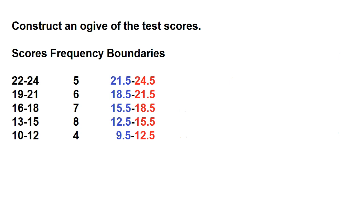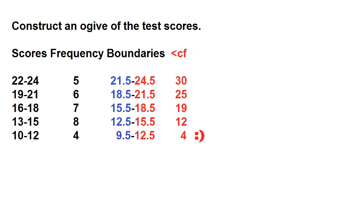Now that we have our class boundaries, let's find the less than cumulative frequency. To find the less than cumulative frequency, copy the frequency of the lowest class interval, then add the frequency of the next upper class interval. The frequency of the lowest class interval is 4, so: 4 plus 8 is 12, 12 plus 7 is 19, 19 plus 6 is 25, and 25 plus 5 is 30.